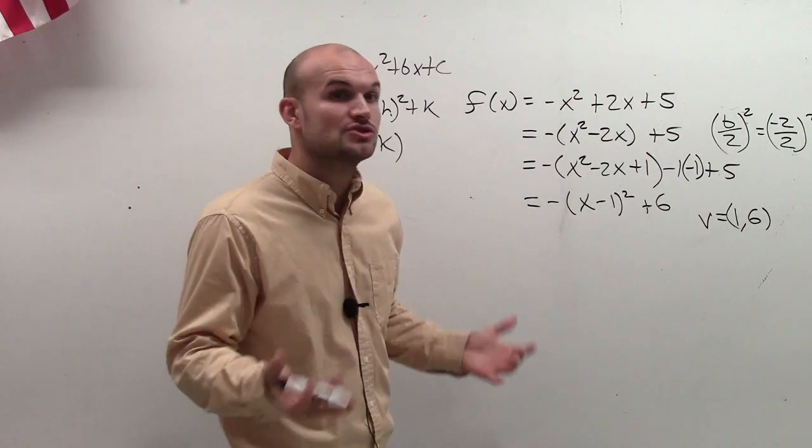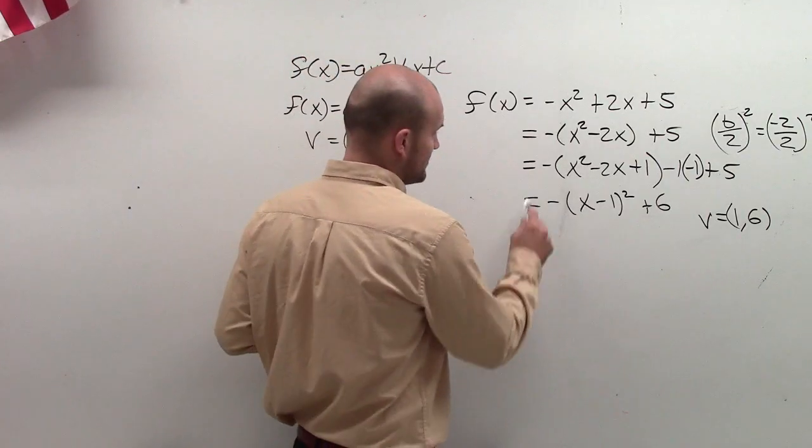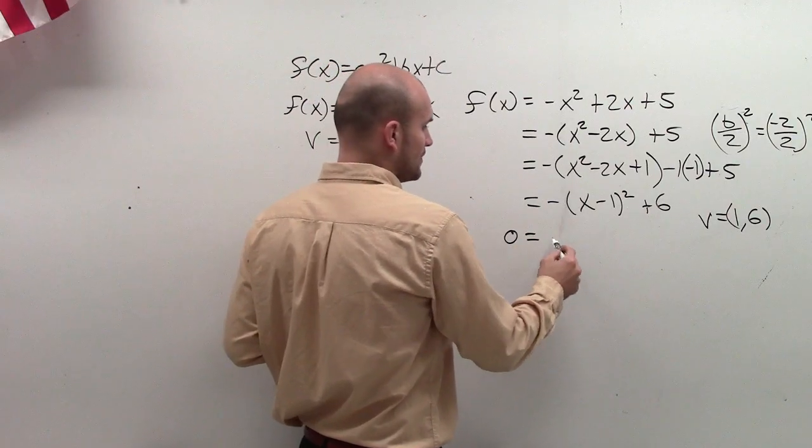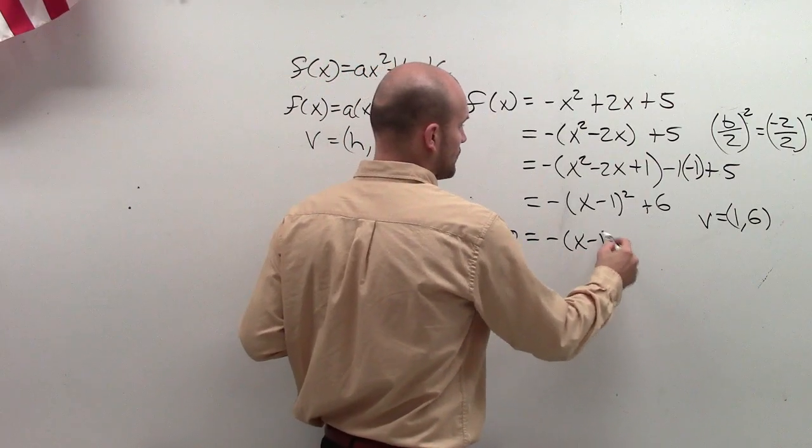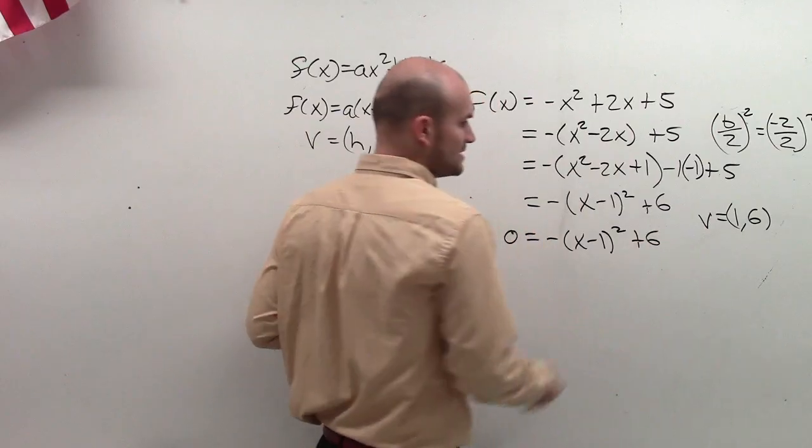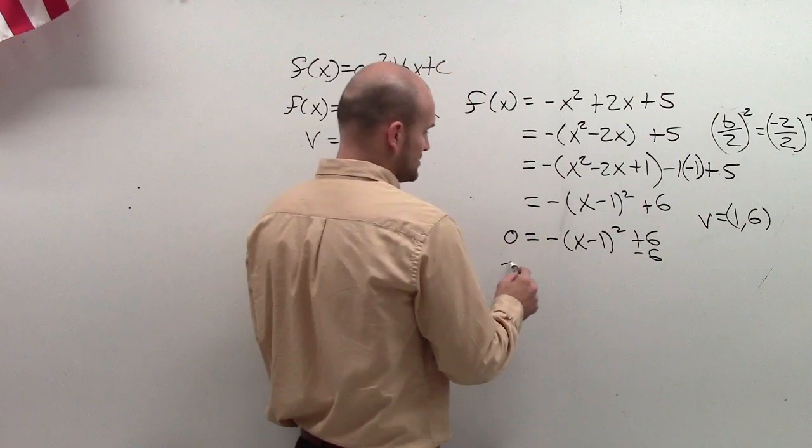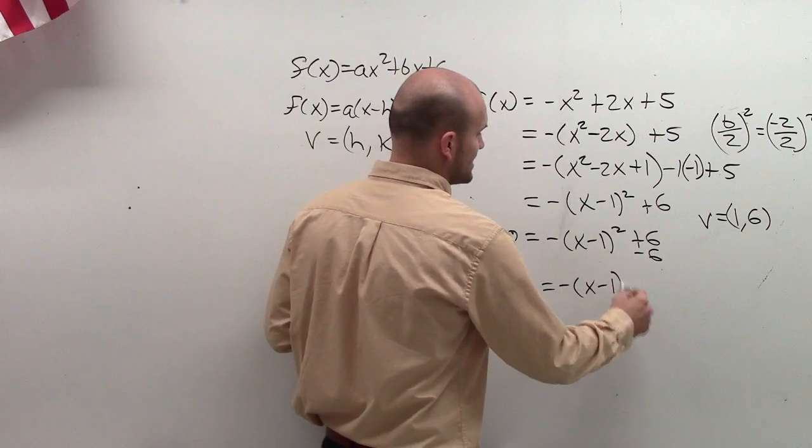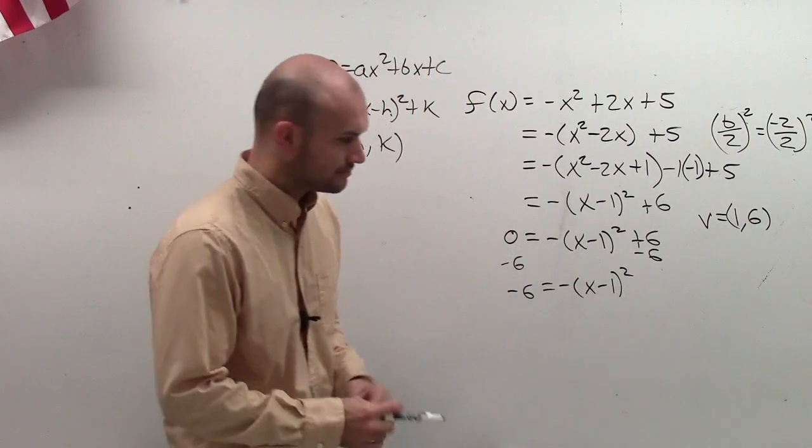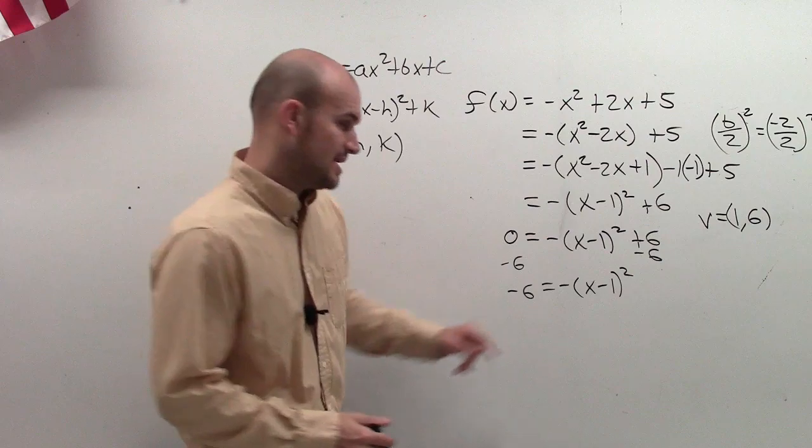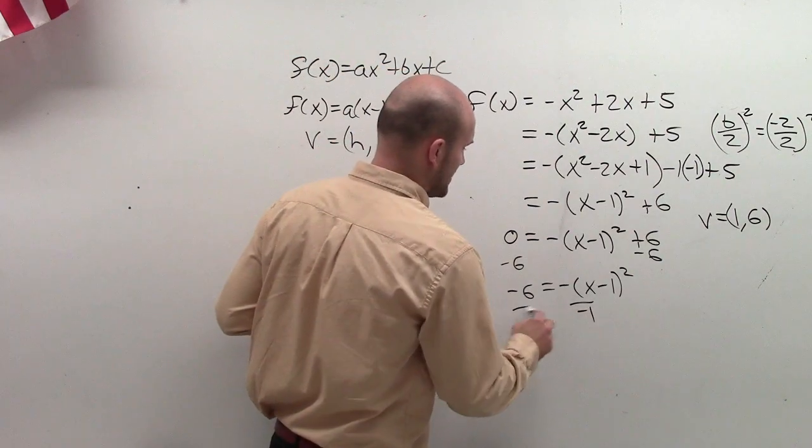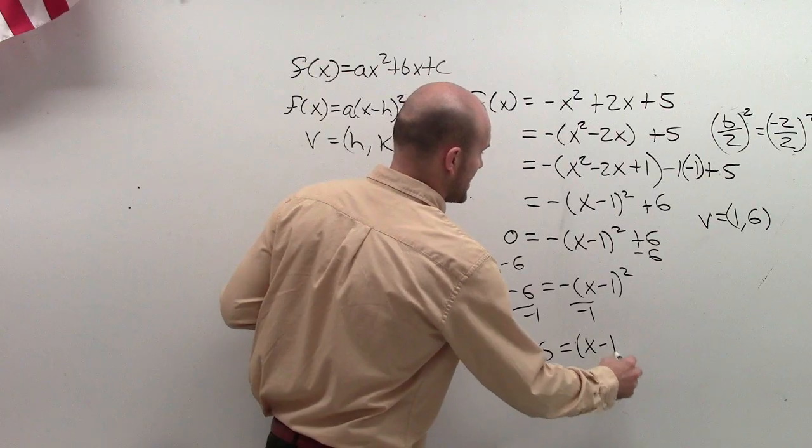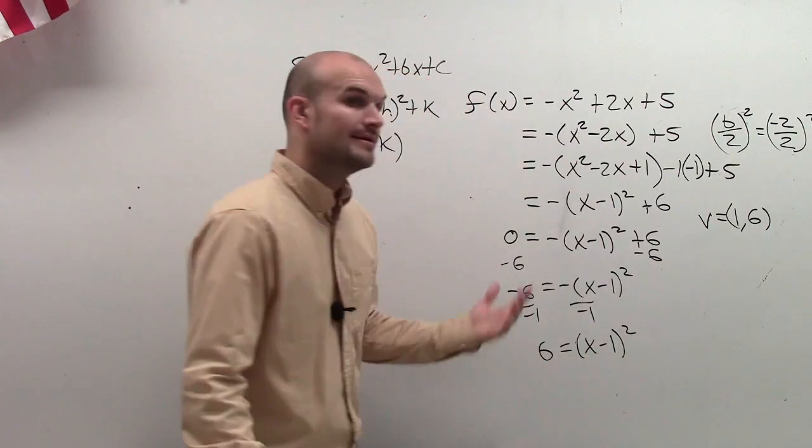Then, the next step is to solve. So to solve, we're going to make sure we have f(x), which is our output, set equal to 0. So I have -(x - 1)² + 6. Subtract the 6 on both sides, so I get -6 = -(x - 1)². Then I've got to get rid of the negative 1, so I divide by negative 1 on both sides, and I get positive 6 = (x - 1)².